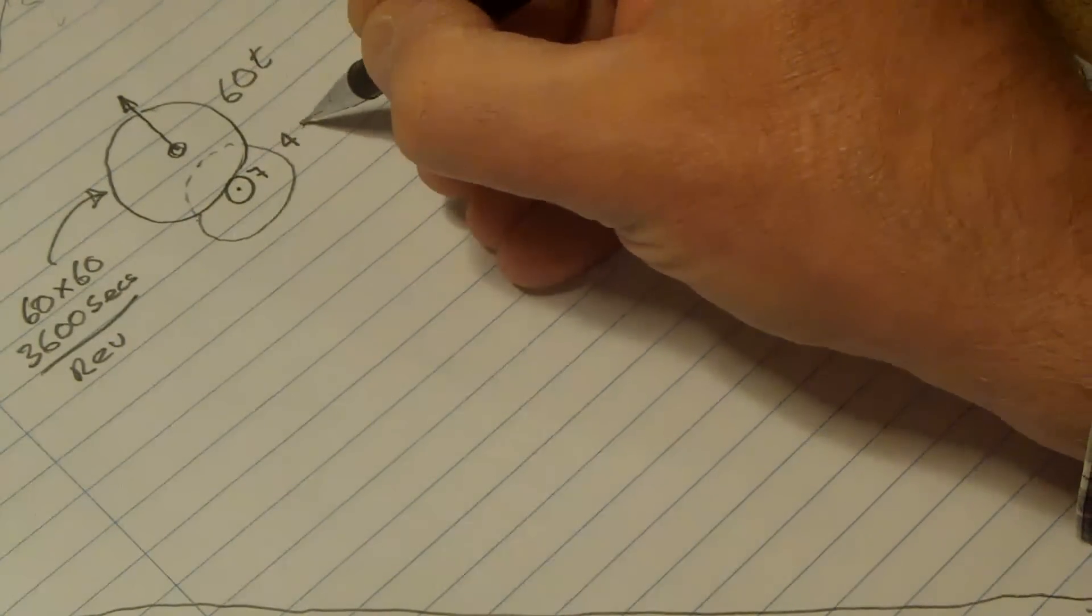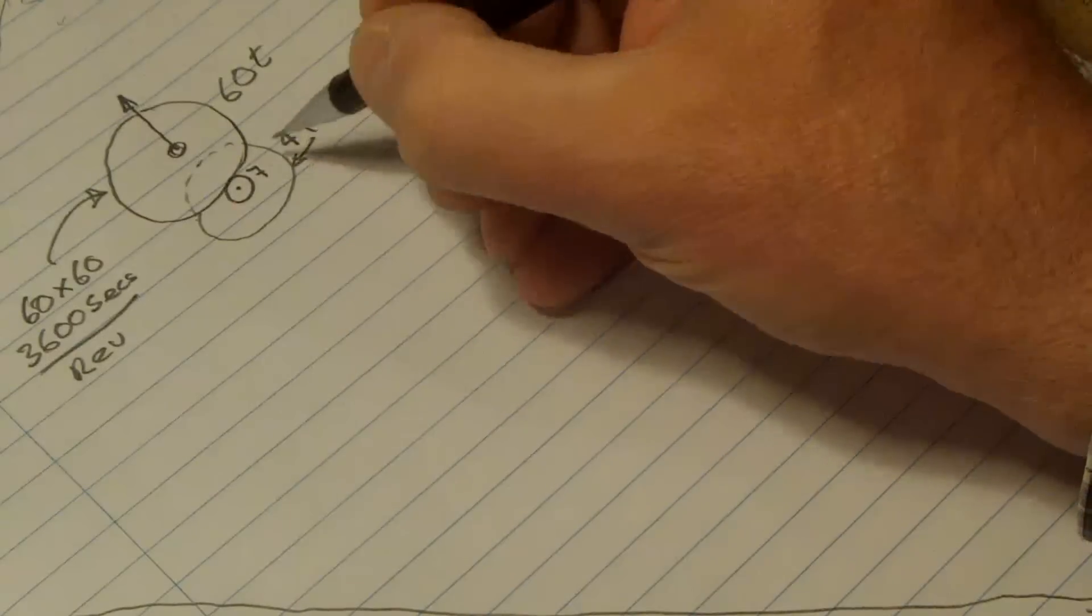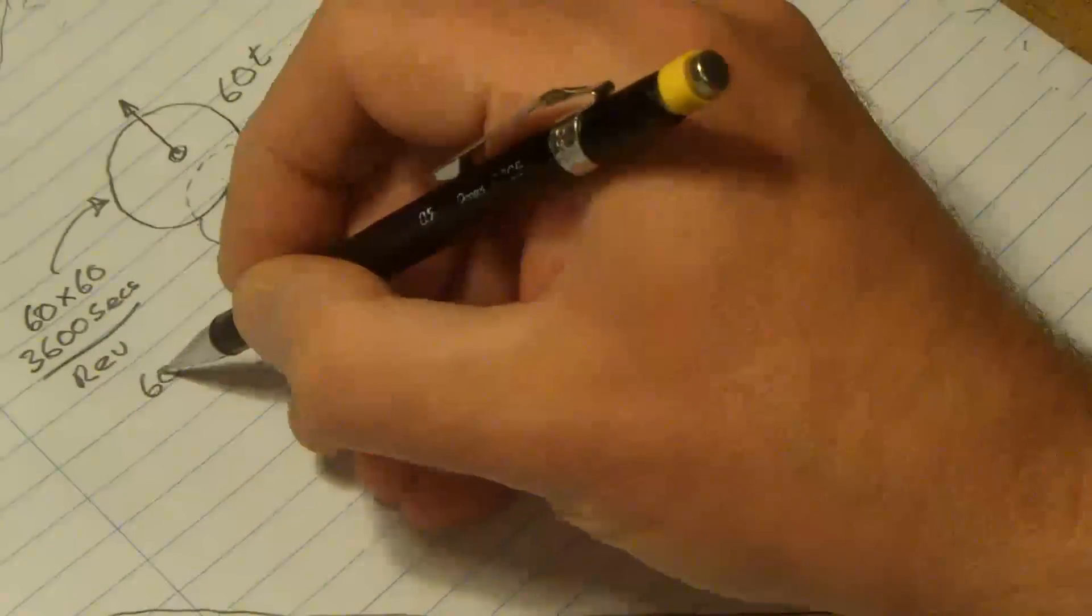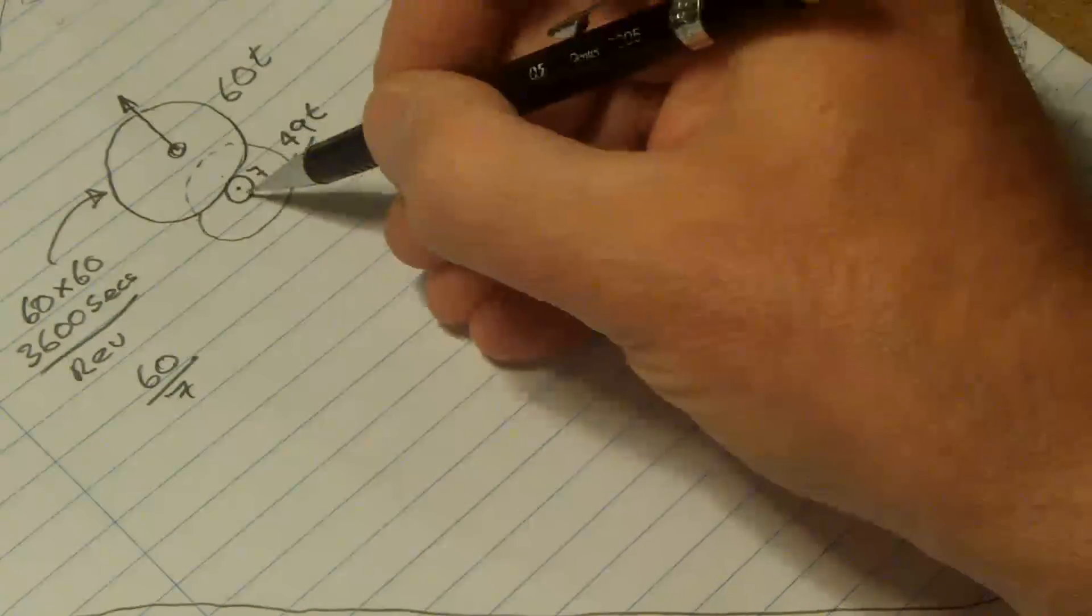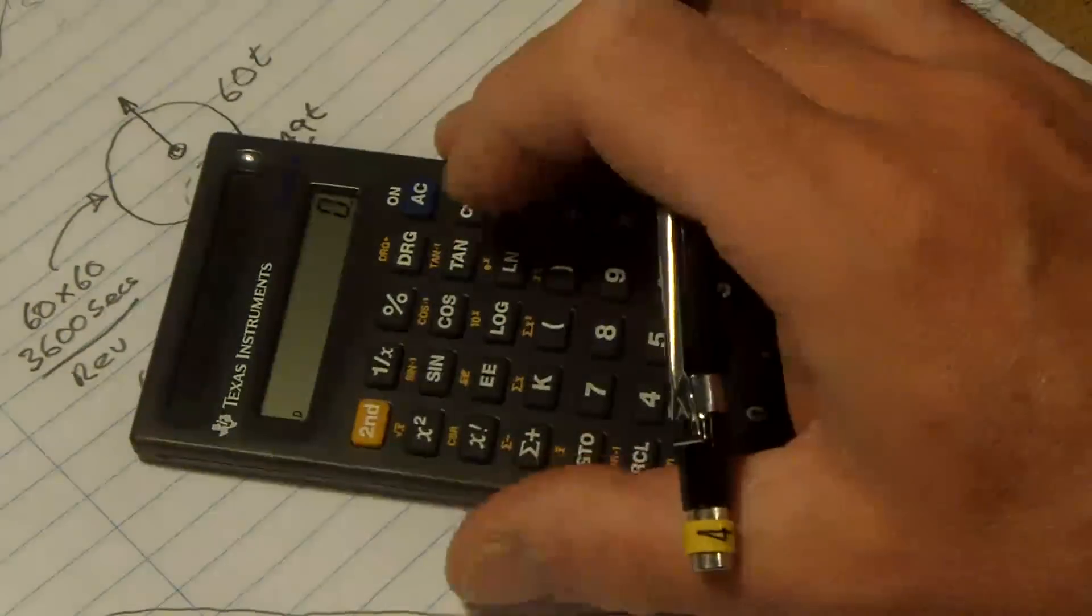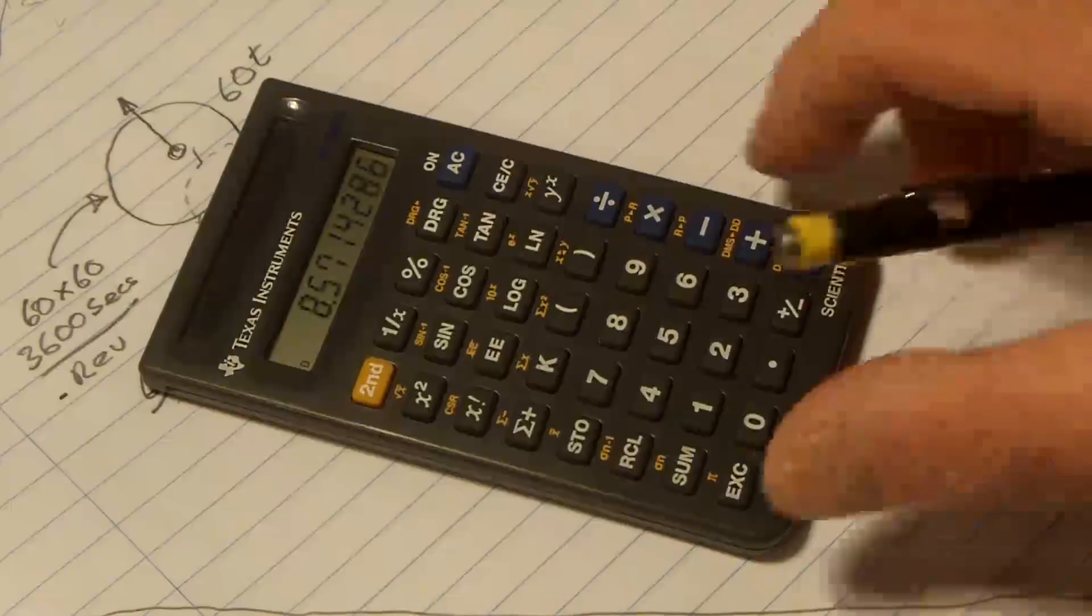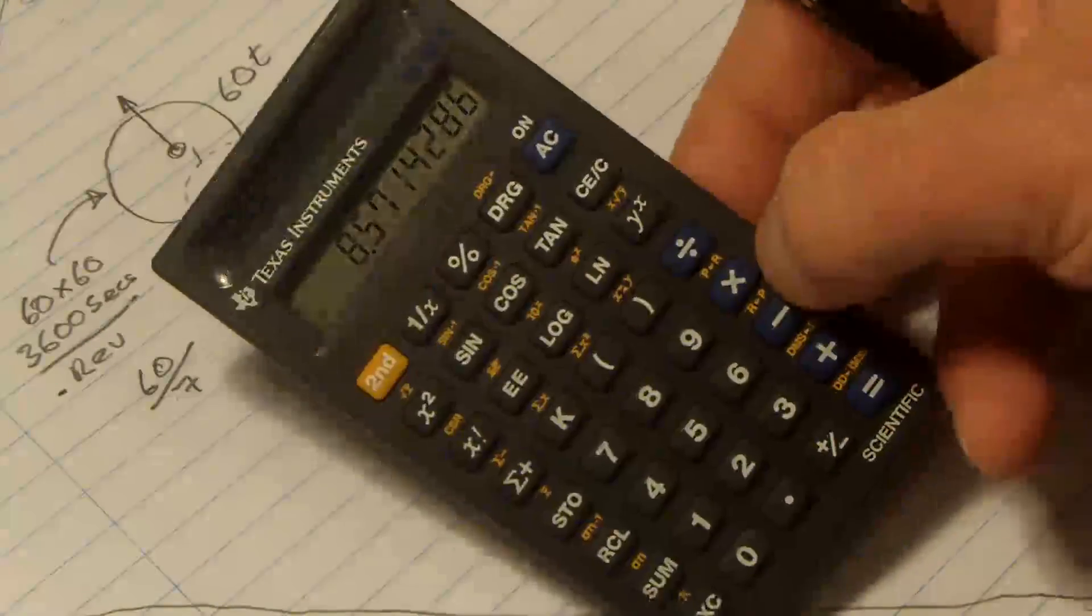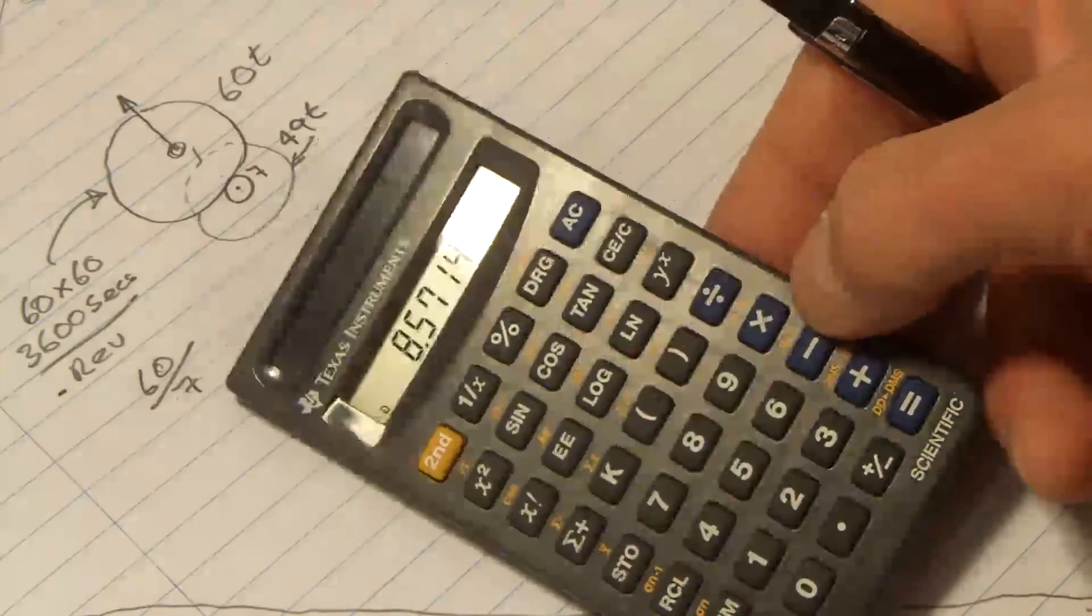The next little wheel has a pinion with 70 and it has 49 teeth on this outer edge. So the ratio between that and that is 60 divided by 70. We'll do it the easy way: 60 divided by 7 equals, and it comes out to a bit of a miserable number you see there, 8.714286.